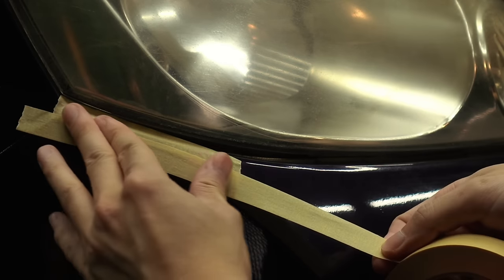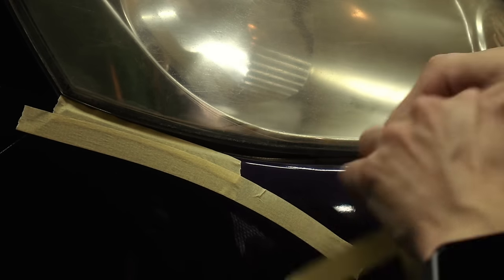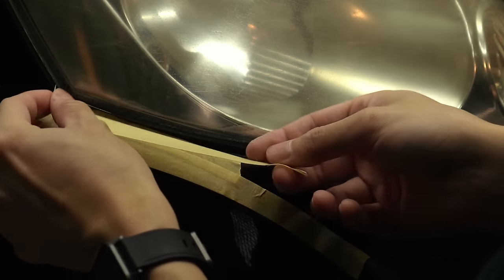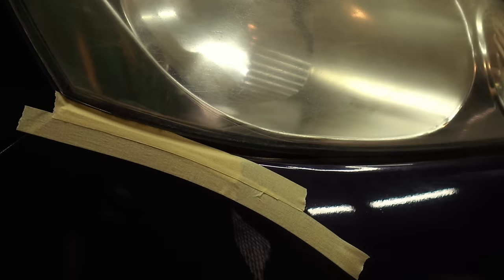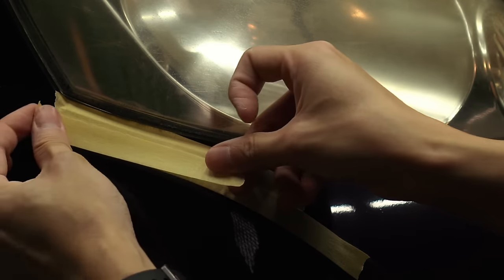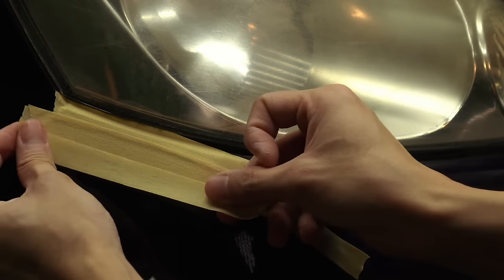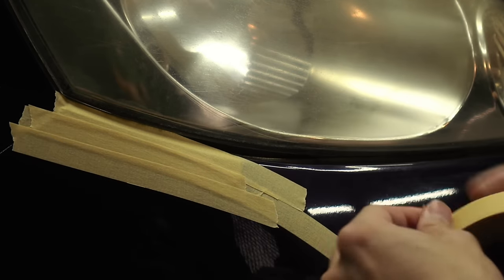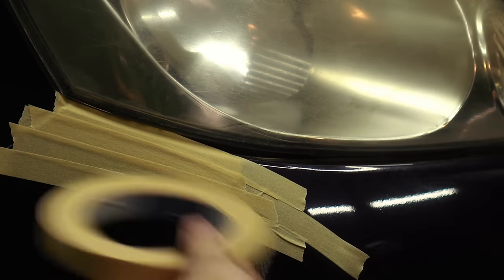That way you can be confident in sanding and polishing right up to the edge, knowing that you will not damage the bumper or the surrounding area. And you want to use at least maybe two or three layers of tape, since sanding removes much more material.